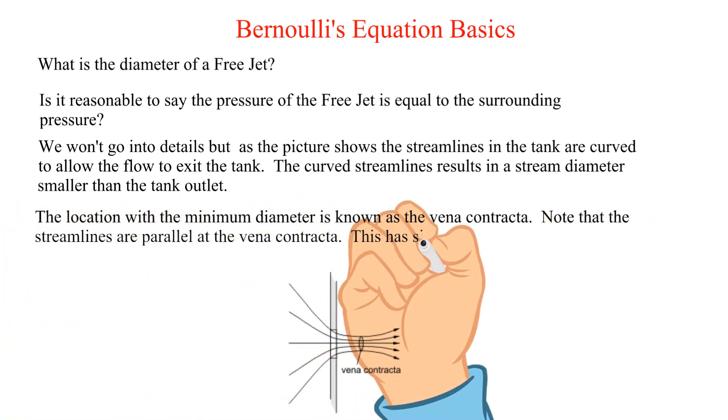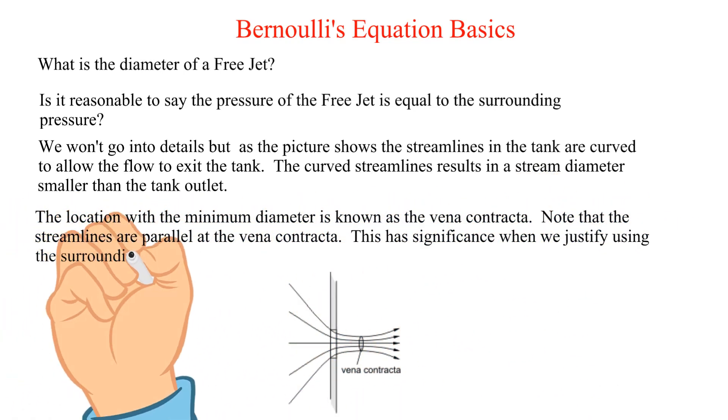Note that the streamlines are parallel at the vena contracta. This has significance when we justify using the surrounding pressure as the pressure of the free jet. We will dive into this next.